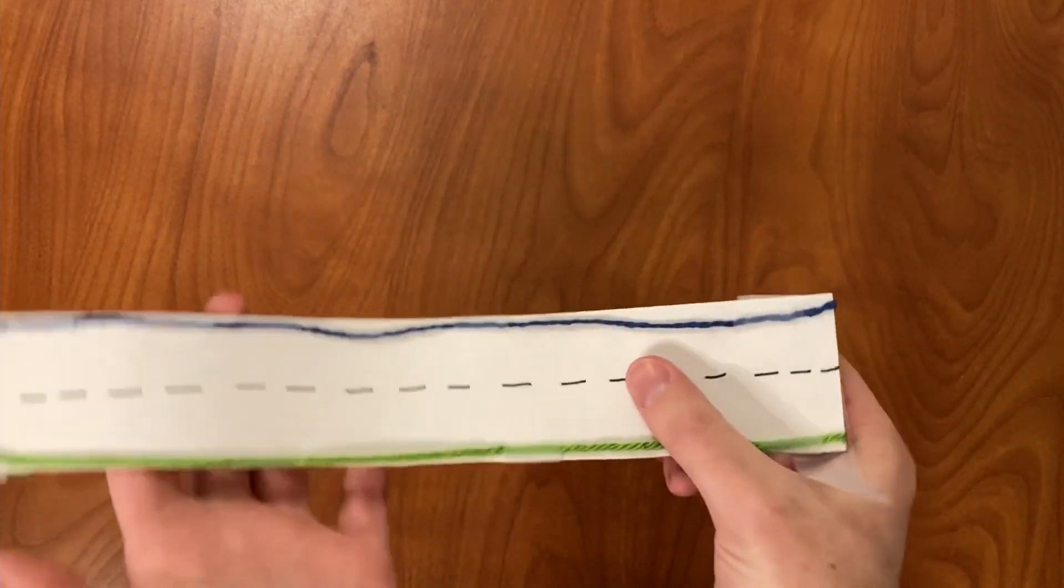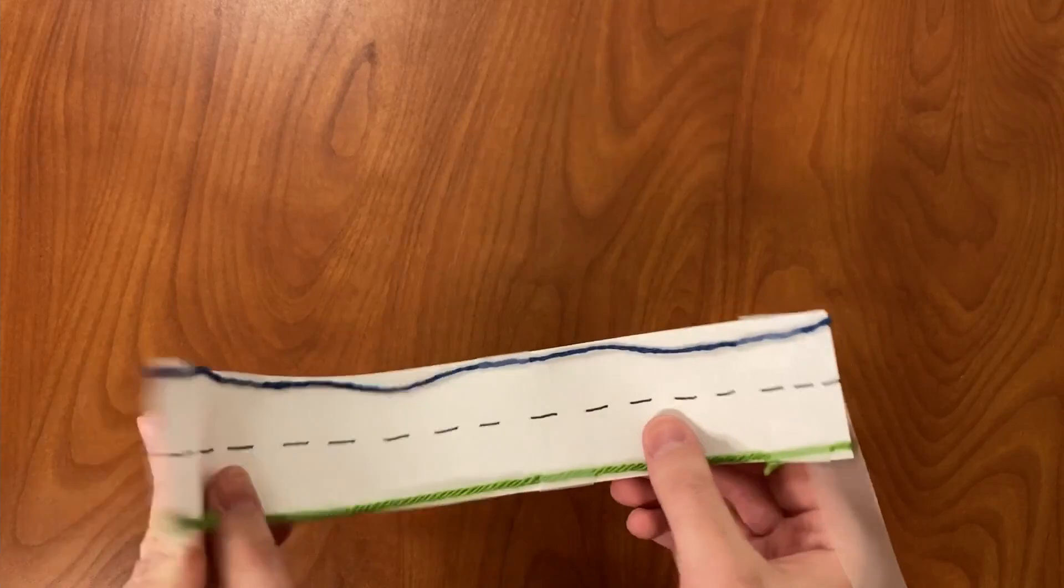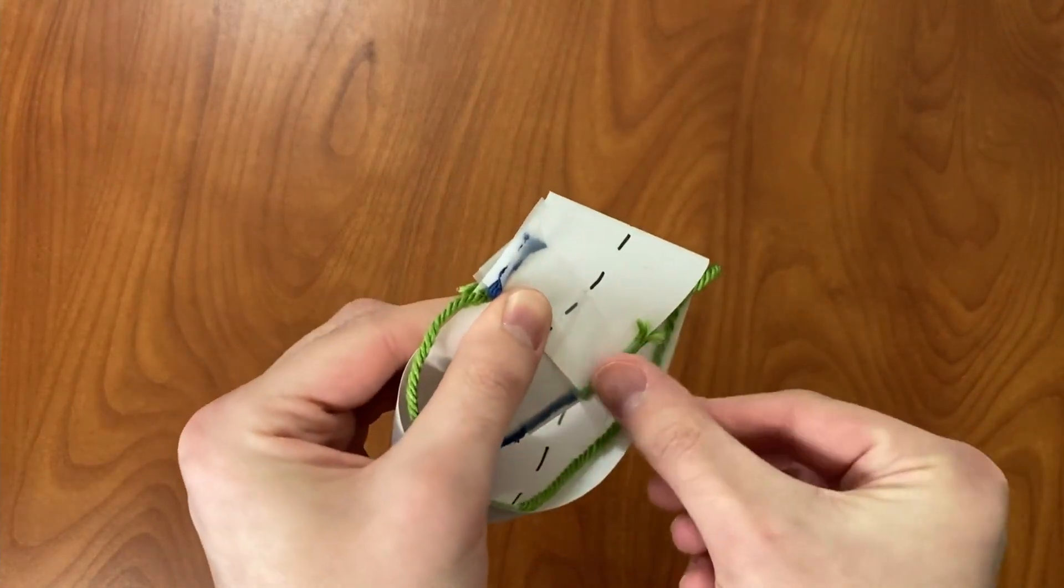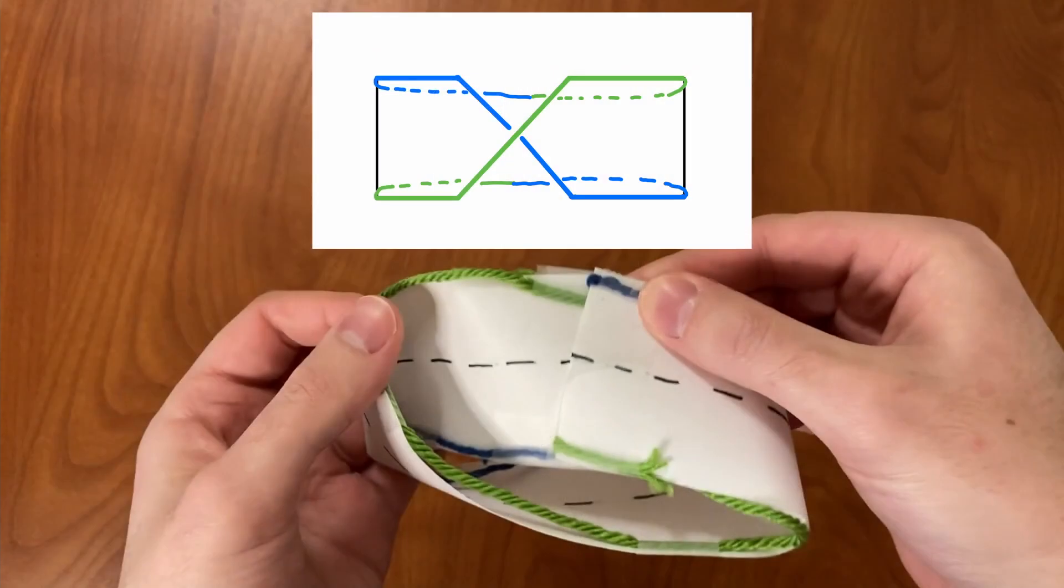let's put a piece of string along the top and the bottom of the strip of paper before we twist it into a Mobius strip. When we make a half-twist in the paper, the strings cross over each other, and when we tape it up, the two strings connect.